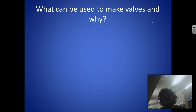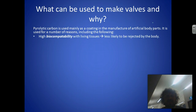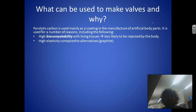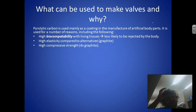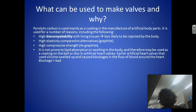So what do we use to make them, and why? Pyrolytic carbon — we tend to use that as a coating for artificial body parts for various reasons. It has high biocompatibility, which means the body is not going to reject it, or is less likely to. It has elasticity, meaning it can bend and return to shape, unlike graphite — which is the same sort of thing as in your pencil — very hard and strong, but it will snap if pushed against the grain. Pyrolytic carbon also has high compressive strength, so you can compress it. It's not prone to lipid absorption or swelling in the body. If you use a material that swells — and they used to use silicone — it's going to cause blockages and will have to be replaced.